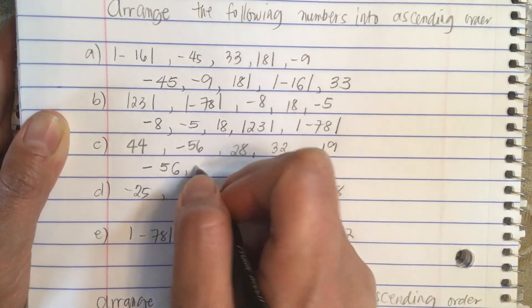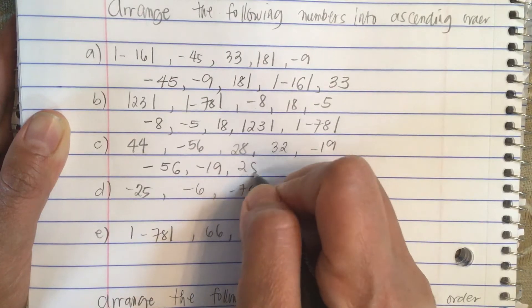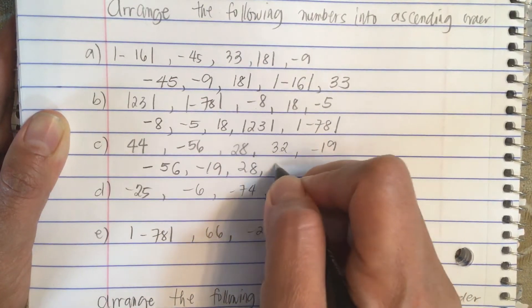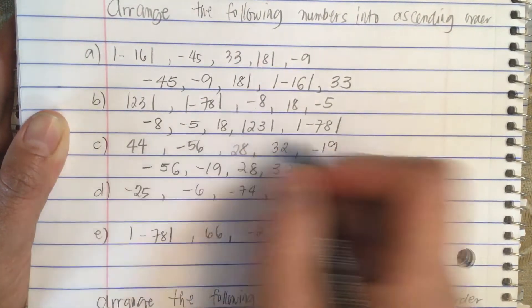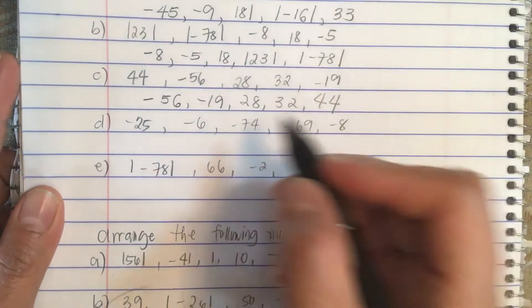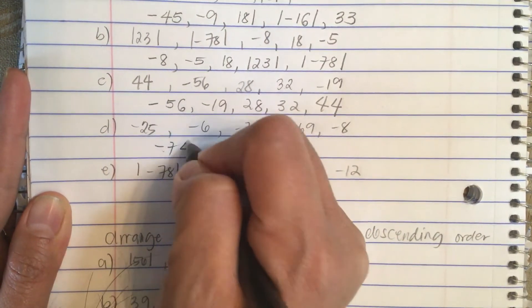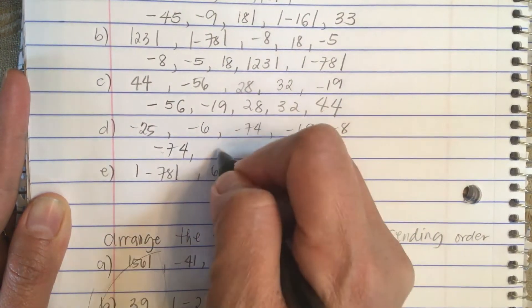And then a minus 19. And then we have a 28. And then 32. And then 44. Here we have a minus 74, and then a minus 69.